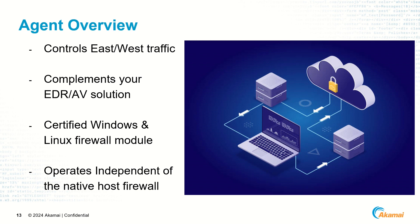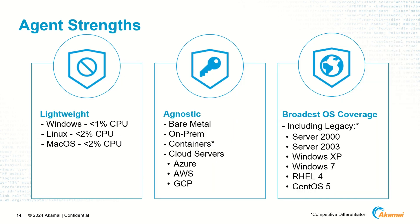The agent is a process-level host-based firewall that controls east-west traffic and complements your EDR and antivirus solution. It is a certified Microsoft Windows and Linux RHEL and SUSE firewall module that operates independent of the native host firewall but can coexist. The agent is lightweight, using less than 1% CPU utilization for Windows and less than 2% for Linux and macOS. It is agnostic and can be installed on bare metal, on-prem, in containers, or on cloud servers such as Azure, AWS, and GCP. It also has the broadest OS coverage, supporting legacy operating systems such as Server 2000, 2003, Windows XP, RHEL 4, and CentOS.